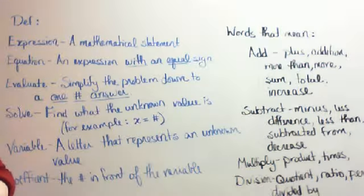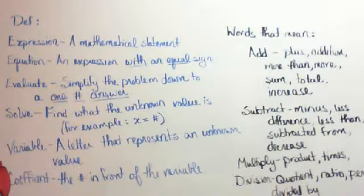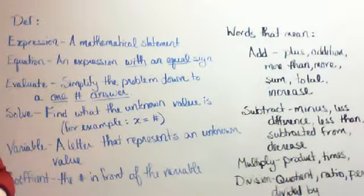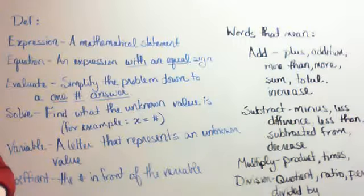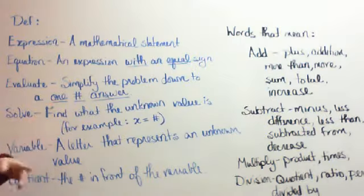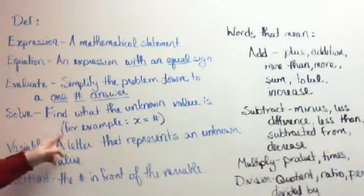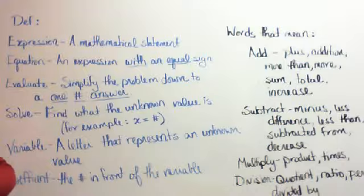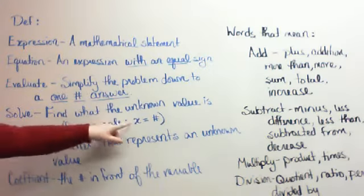No equal sign in the equation means you can't have an equal sign in your answer. Evaluating is when you come down to a one-number answer — it doesn't matter how many letters or variables or exponents were in the problem, there better not be any in your answer. All you get is one number as your answer. Whenever you solve, you find out what the unknown value is, so an example answer would look like x equals a number, because x is our unknown value.